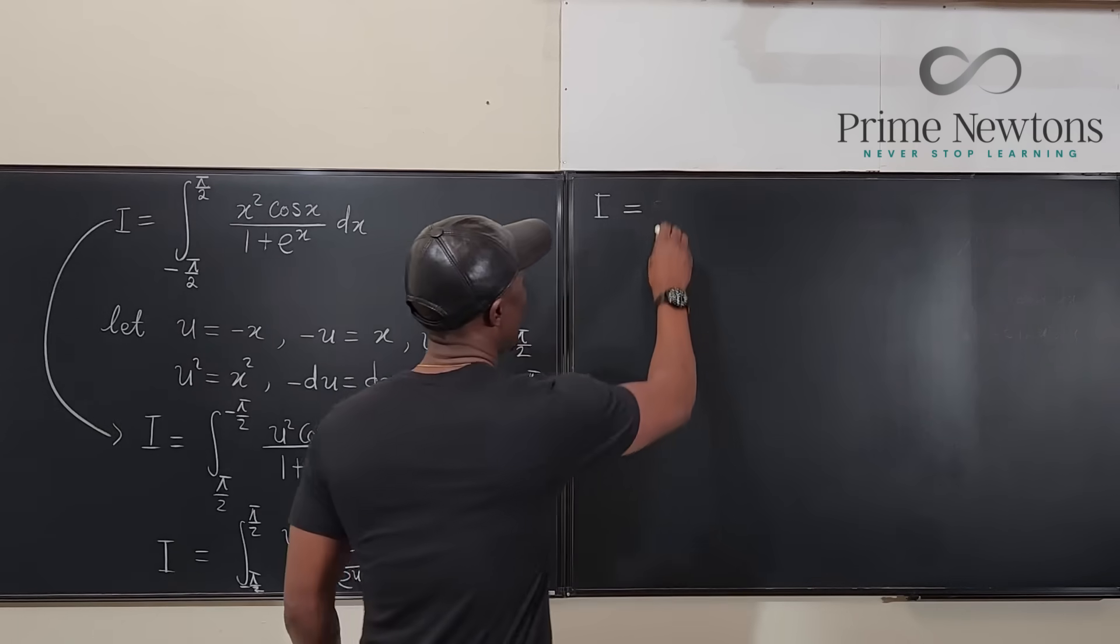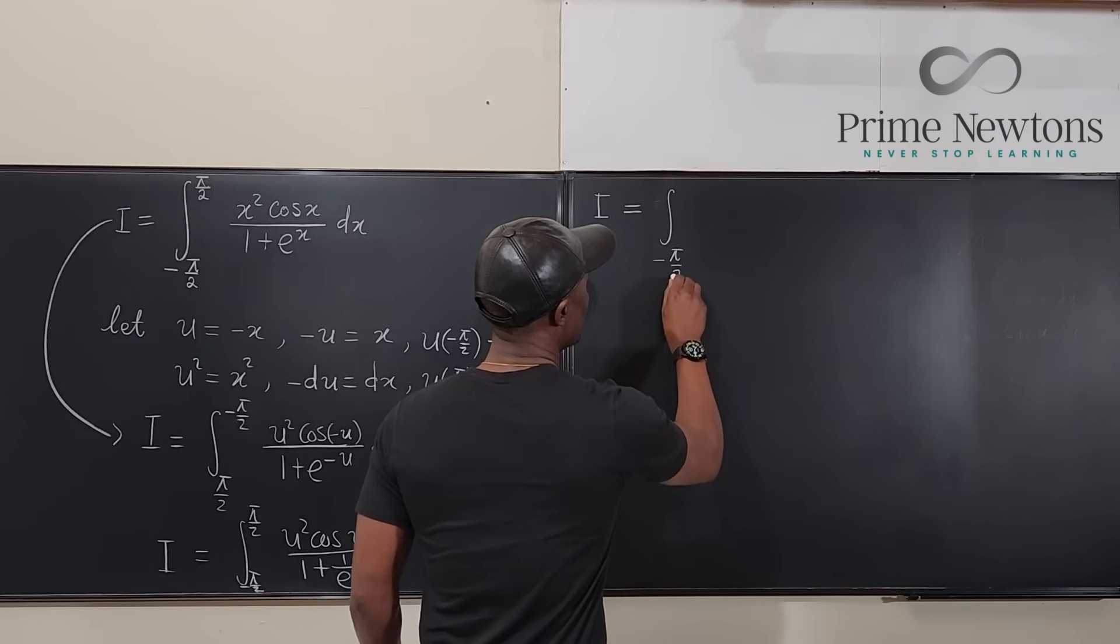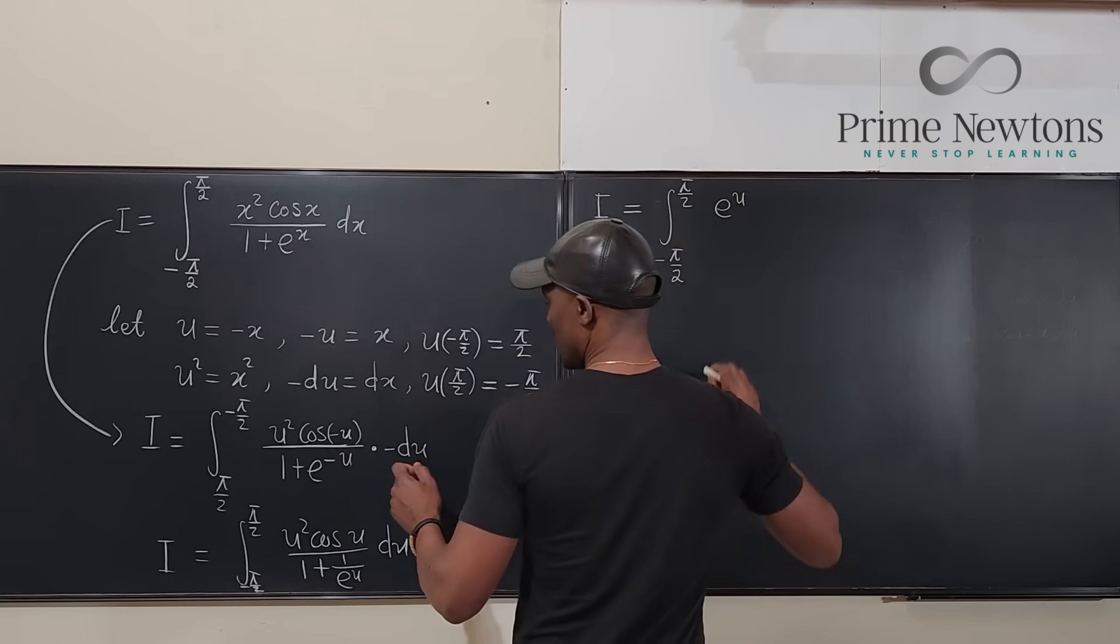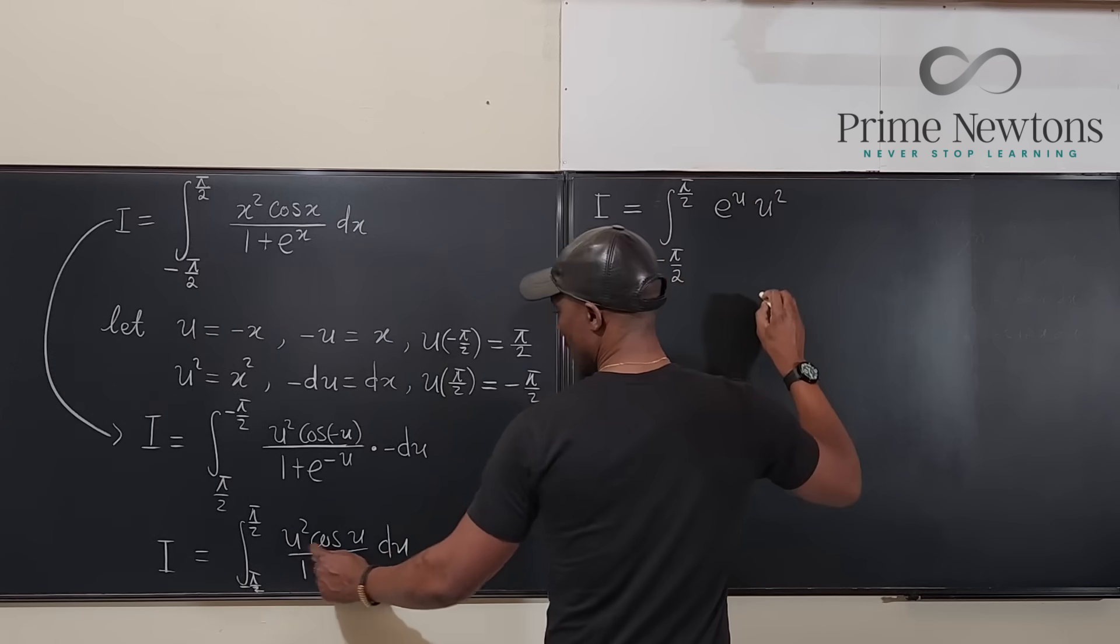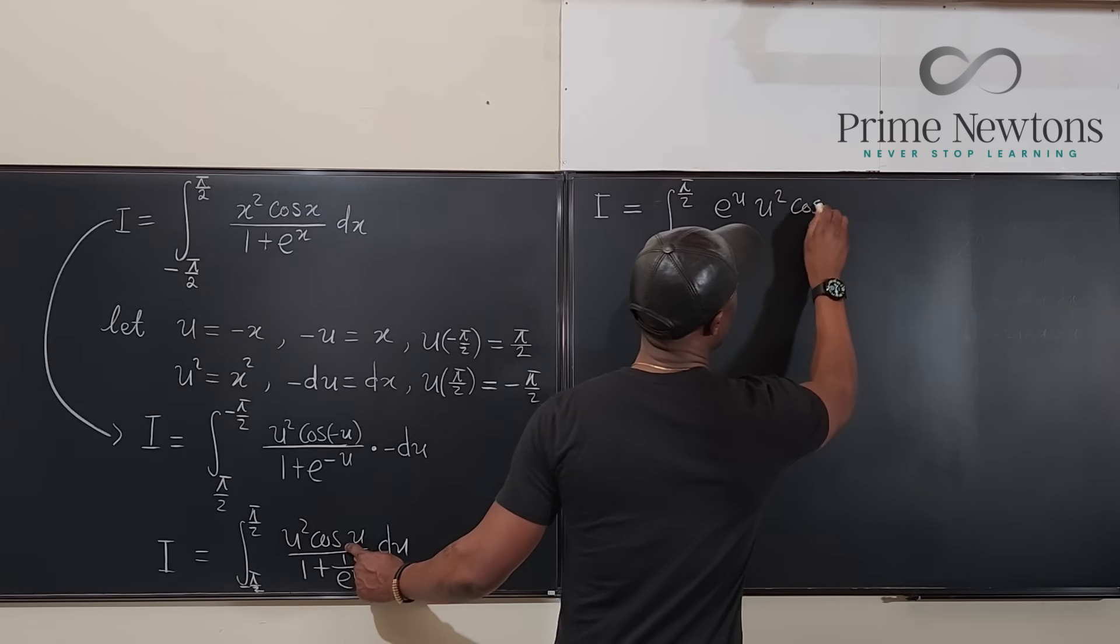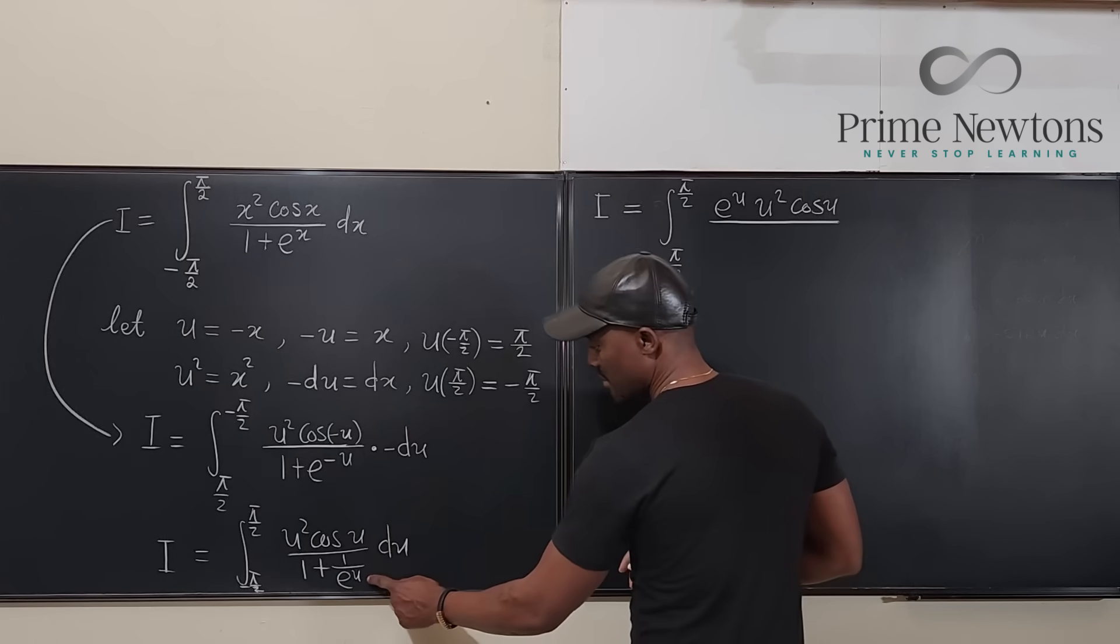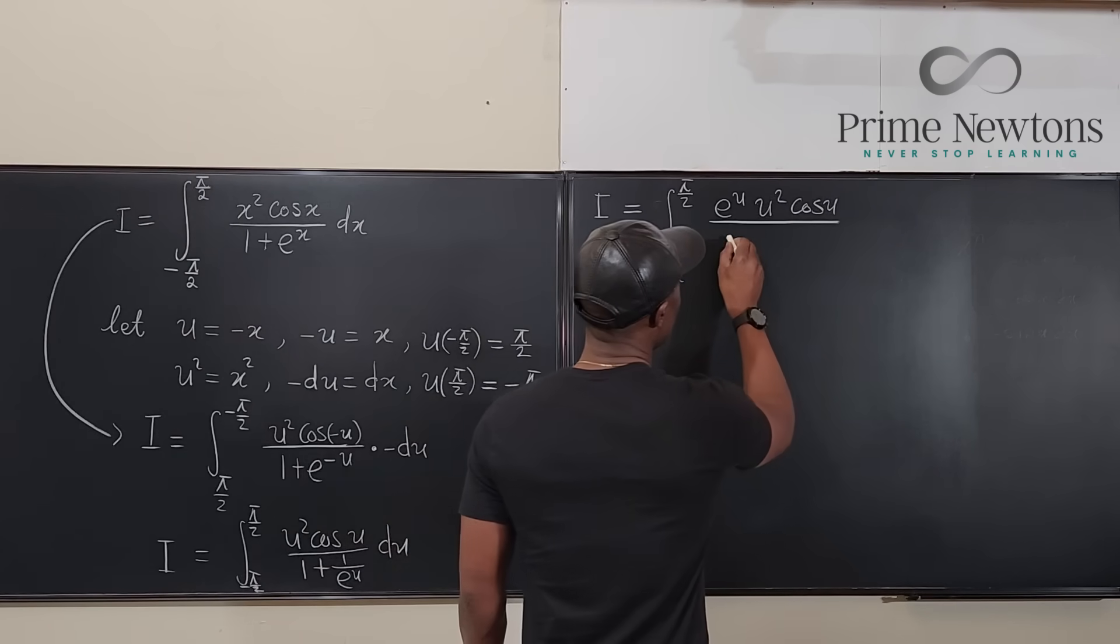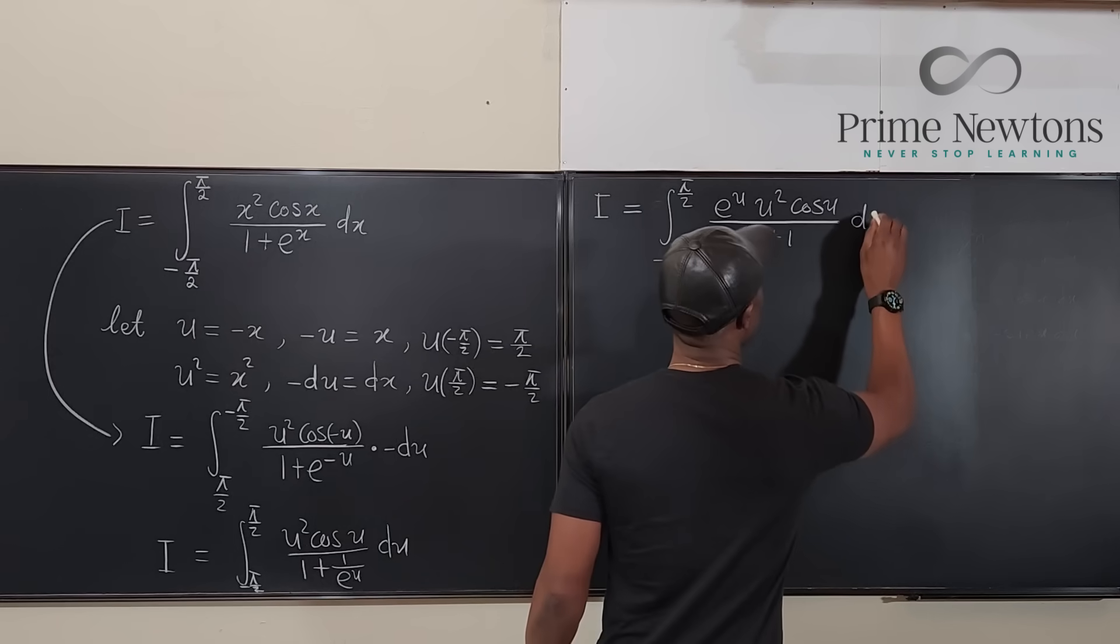So we're going to have the integral from negative π/2 to π/2 of e to the u times u squared times cosine u over if I multiply the bottom by e to the u I'm going to get e to the u plus 1. So it's going to be e to the u plus 1 and then here I'm going to have du.